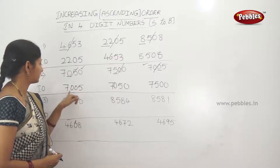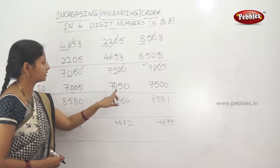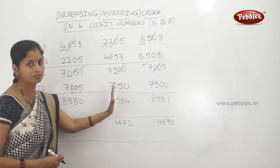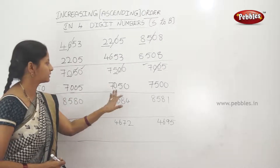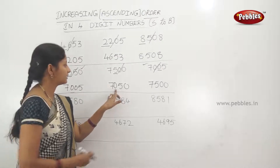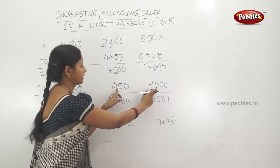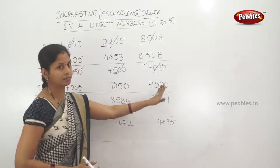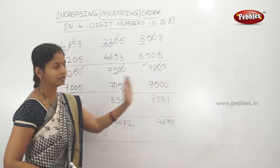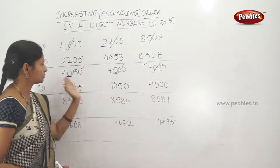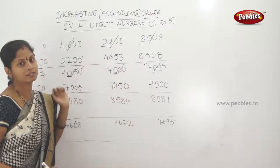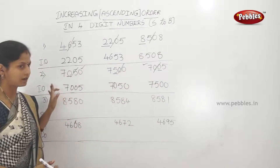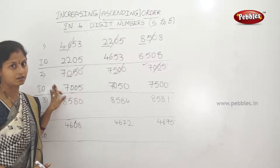Confirming: third digit 0, third digit 5, and third digit 5. The smallest to biggest arrangement is complete. This is increasing order and ascending order.